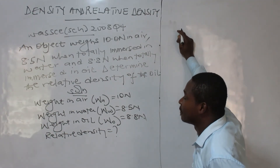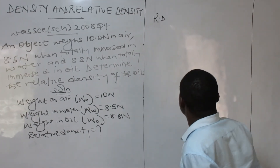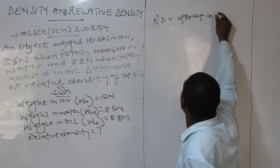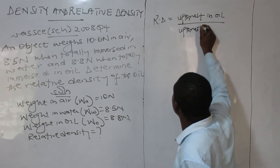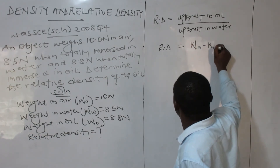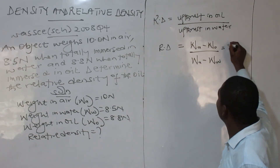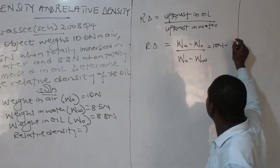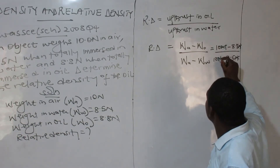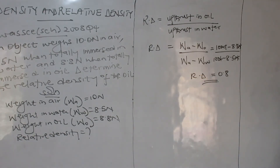Determine the relative density of the oil. Since I have upthrust entities here, I will use the RD formula involving upthrust. Relative density equals upthrust in oil over upthrust in water. The upthrust in oil is the weight in air minus the weight in oil: 10 N minus 8.8 N. The upthrust in water is 10 N minus 8.5 N. Relative density has no units — because it is a ratio, the units cancel out.